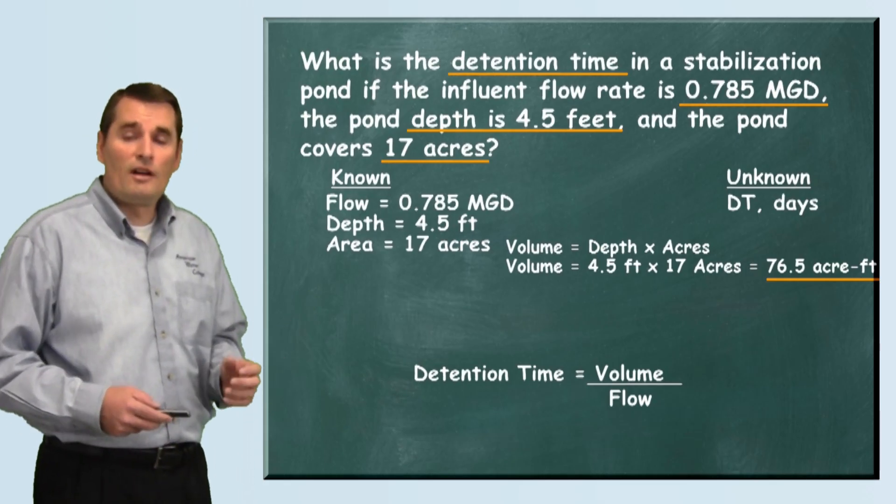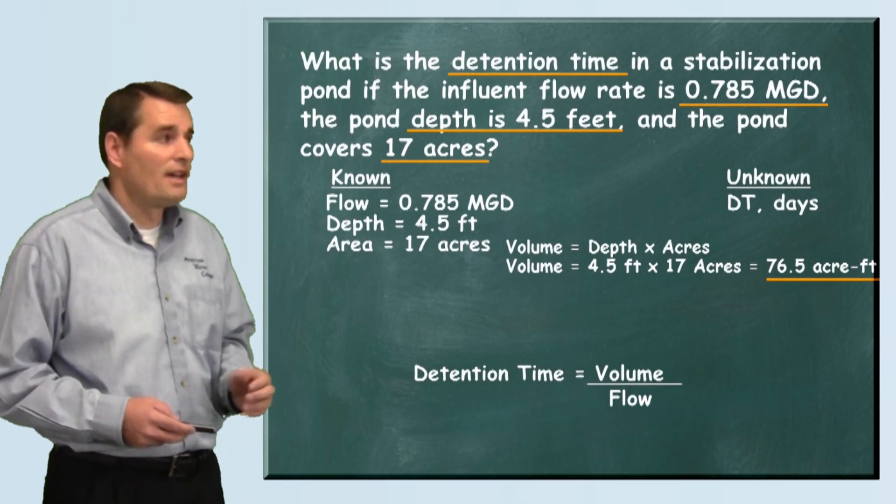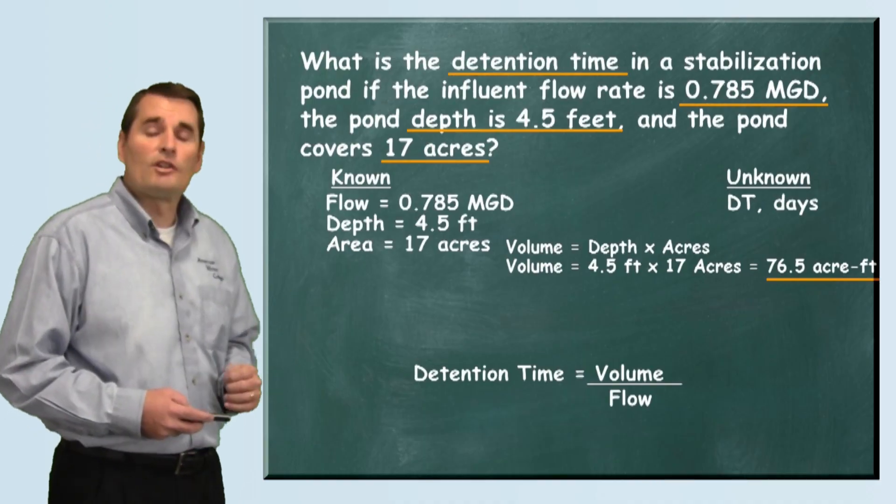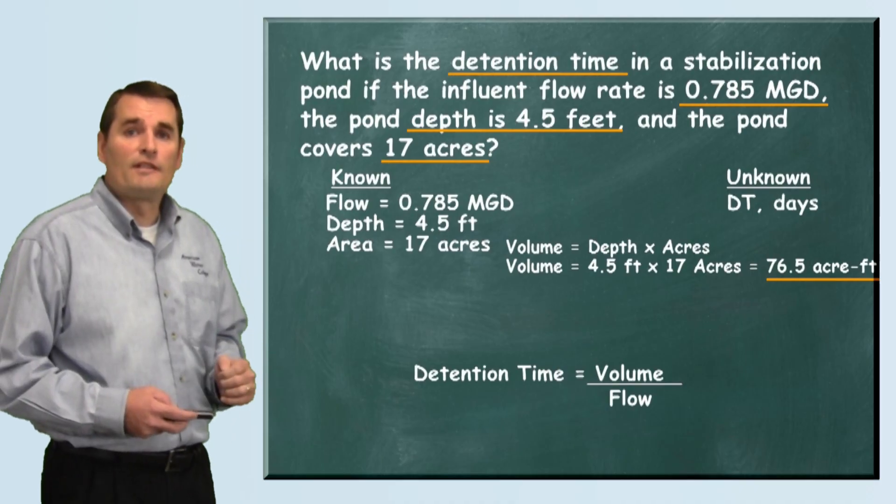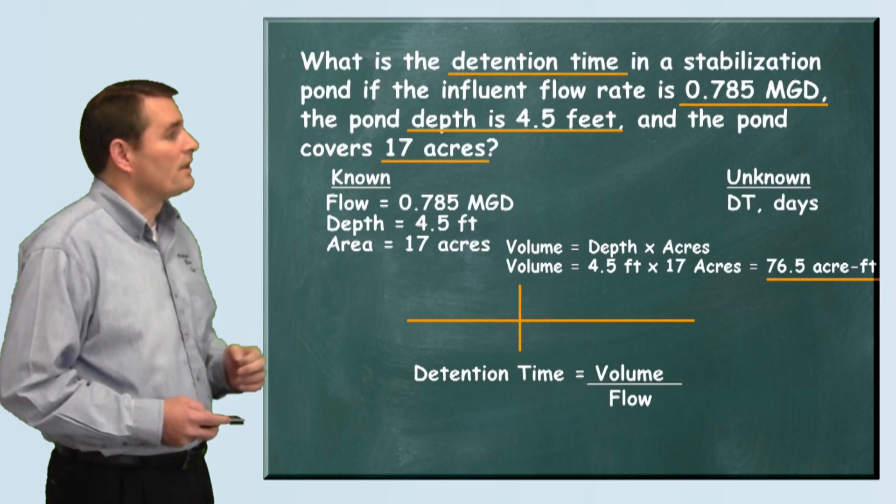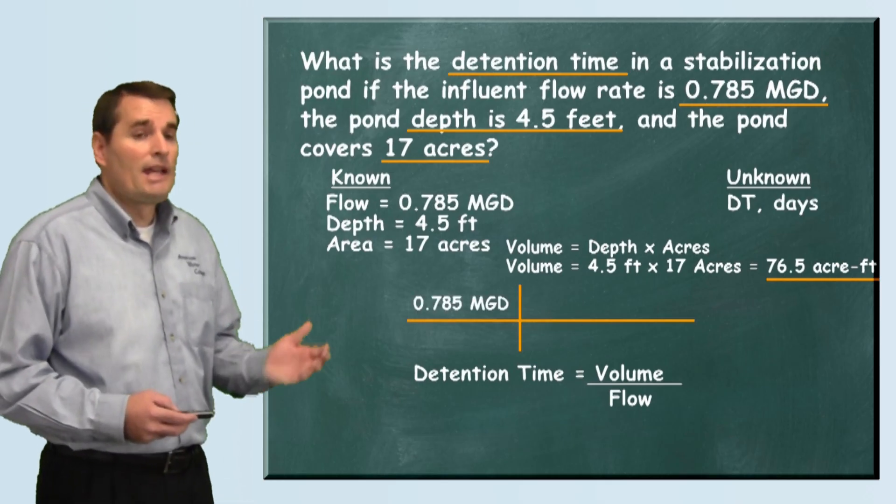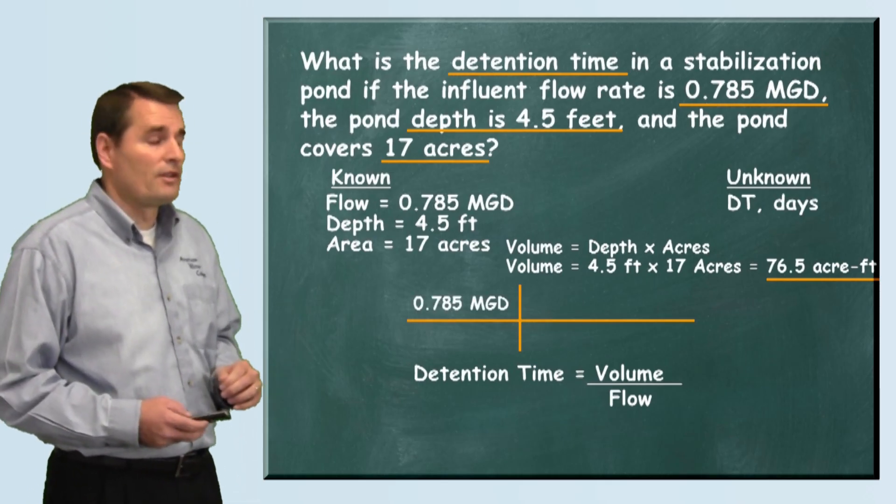Now that we know the pond volume is 76.5 acre-feet, we need to convert our flow into acre-feet per day. So we're going to start with our 0.785 MGD and convert that to acre-feet per day.